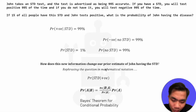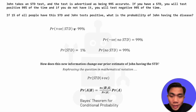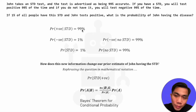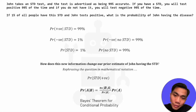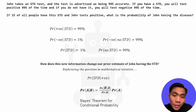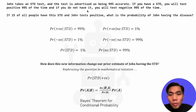Next, the probability of testing positive given that we have the STD is 99%. On the flip side, the probability of testing negative given that we have the STD is 1%, because by the laws of total probability in the event space of having the STD, we can either test positive or test negative, and these sum to 100%. Similarly, for the event space of not having the STD, testing negative given no STD is 99%, therefore testing positive given no STD is just 100% minus 99%, which is 1%.